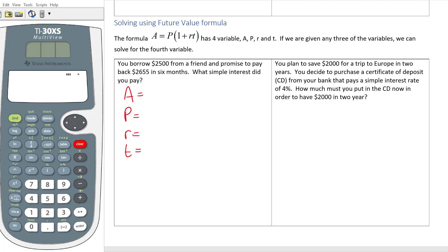$2,500 is what you borrowed now. Now is P, present value. You're going to pay back $2,655. That's what you're going to pay back in the future, so that's A. What simple interest did you pay? I don't know, so that's going to be your rate and we're going to have a question mark there.